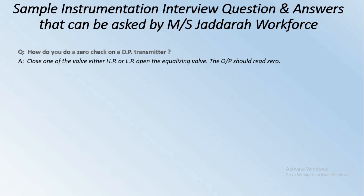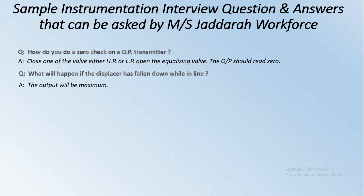Next: How do you do a zero check on a DP transmitter? Close one of the valves — either HP or LP — and open the equalizing valve. The output should read zero. Next: What will happen if the displacer has fallen down while in line? The output will be maximum.